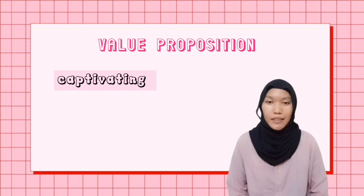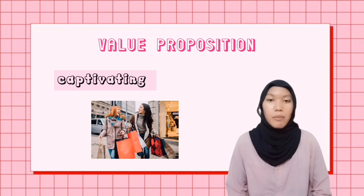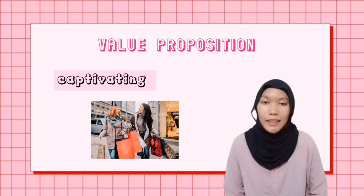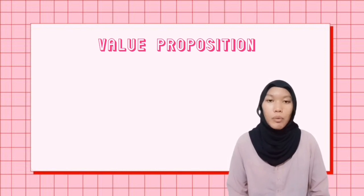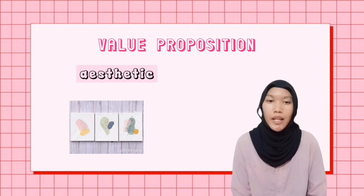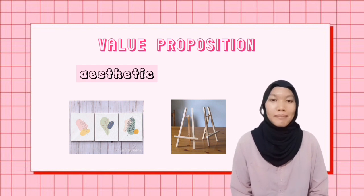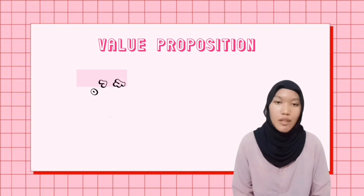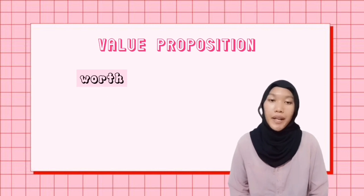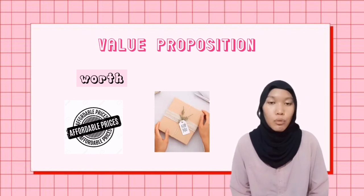Next is captivating. Our product can captivate customers of any age because the products we sell are very trendy nowadays, and people like to buy trendy items. Our product is also aesthetic because you can keep the embroidery canvas in a hanging way or put it on a wooden stand — the perfect way to make your embroidery canvas more aesthetic. Our product is also worth buying because we sell the embroidery canvas at an affordable price, and you can give it as a gift to loved ones.